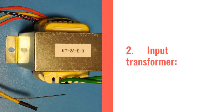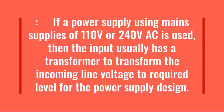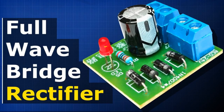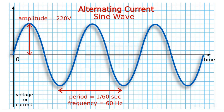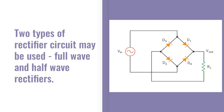2. Input transformer. If a power supply using mains supplies of 110 volts or 240 volts AC is used, then the input usually has a transformer to transform the incoming line voltage to the required level for the power supply design. 3. A rectifier. It is necessary to change the incoming AC waveform to a DC waveform. This is achieved using an AC rectifier circuit. Two types of rectifier circuit may be used: full wave and half wave rectifiers.